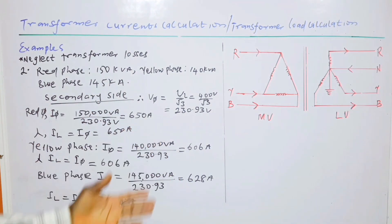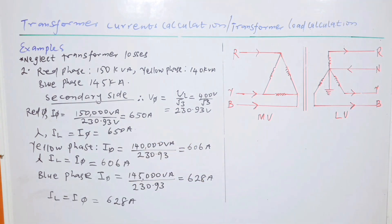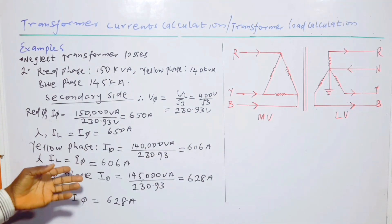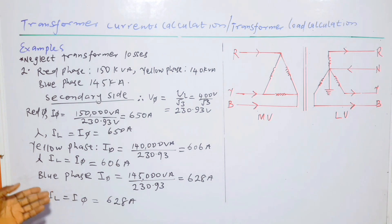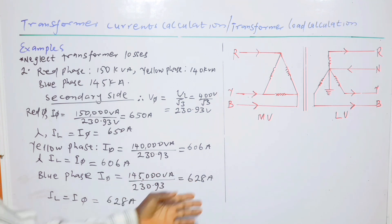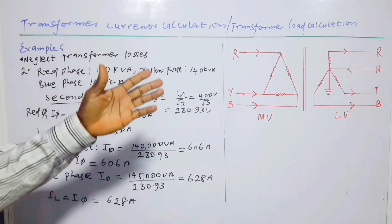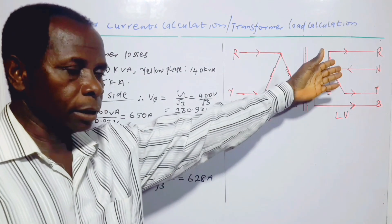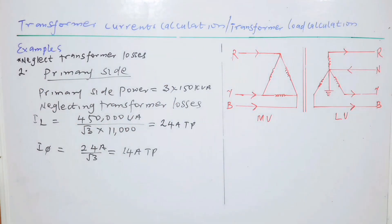Yellow phase: 140,000 VA / 230.3 V = 606 A, and the line current equals the phase current = 606 A. Blue phase: 145,000 VA / 230.93 V = 628 A, which is the same as the line current. For star connection the line current is always equal to the phase current.